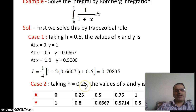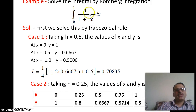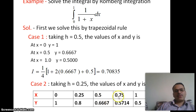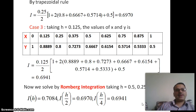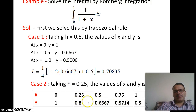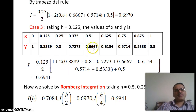For the second case with h = 0.25, the values are: x=0 gives y=1; x=0.25 gives y=0.8; x=0.5 gives y=0.6667; x=0.75 gives y=0.5714; x=1 gives y=0.5. Applying the trapezoidal rule: I = (0.25/2) × (1 + 0.5 + 2×(0.8 + 0.6667 + 0.5714)) = 0.6970.